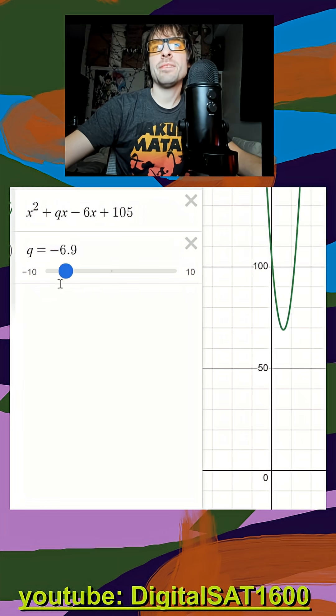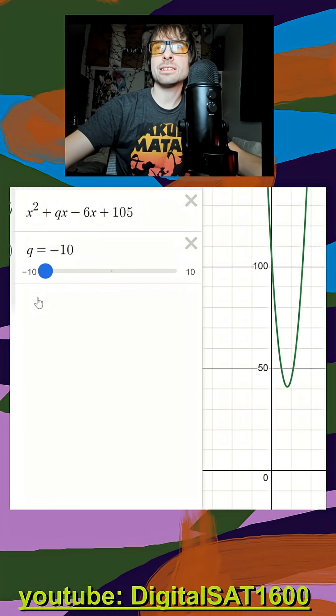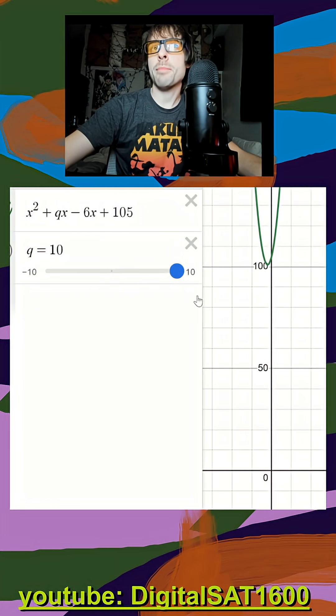Now again, we want the maximum value of q. So even though negative is getting me closer to the x-axis, I want to go to my maximum positive value.